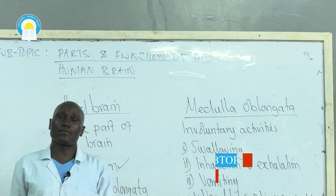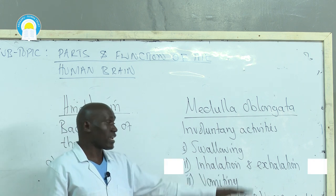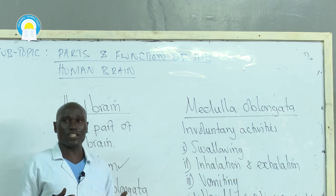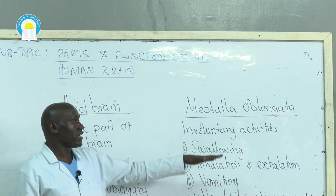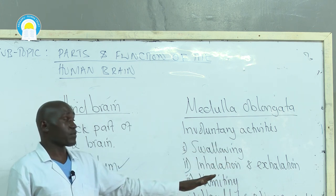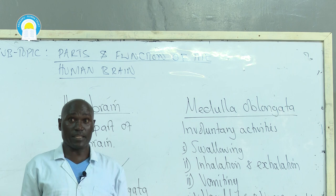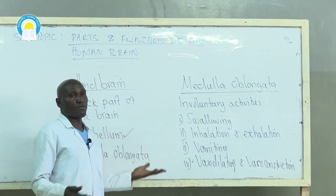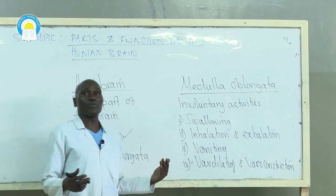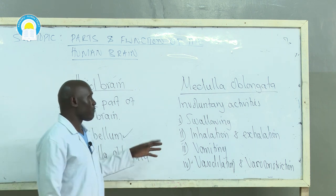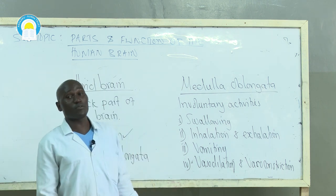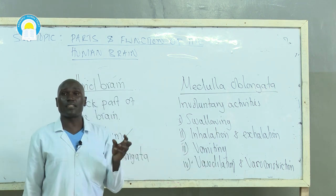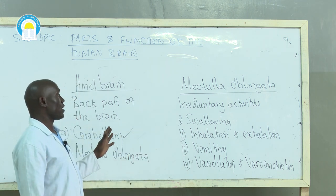Inhalation and exhalation happen whether an individual is conscious or unconscious — even when fast asleep, breathing continues automatically. It is not the individual who decides whether to breathe in or out; it happens automatically, though during physical exercises one can decide on the duration. Vomiting also happens automatically — it is not decided by the individual — making it an involuntary activity controlled by medulla oblongata.